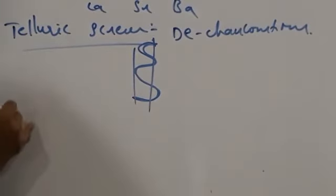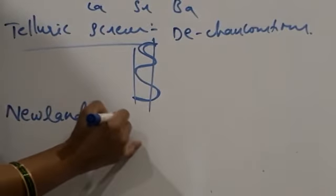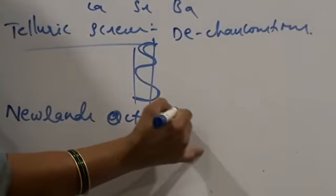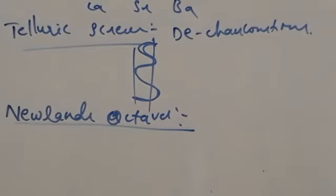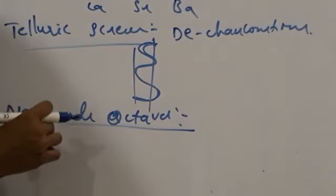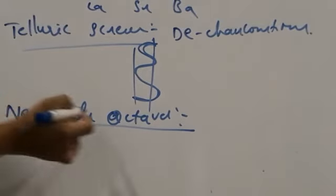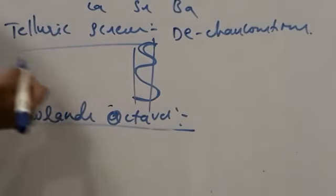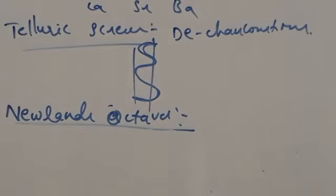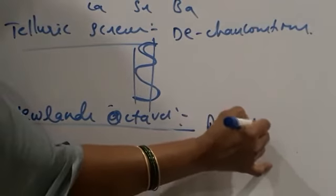Next is Newlands' octaves. Here also, scientist Newlands arranged the elements in the increasing order of their atomic weights. One important observation is that the properties of every 8th element are similar to those of the 1st element — just like in musical notes, where every 8th note is similar to the 1st note. That's why these elements are called octaves: Newlands' octaves. Here also, atomic weight is the basis.